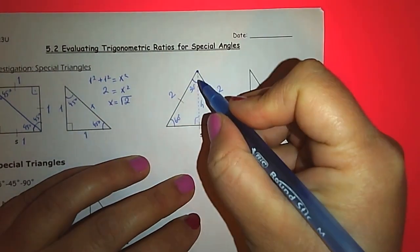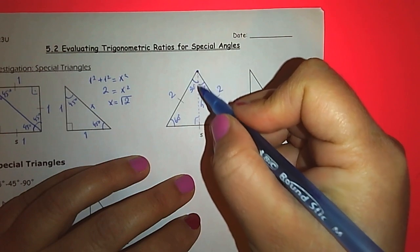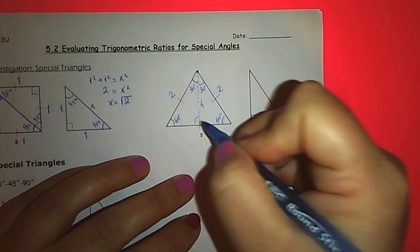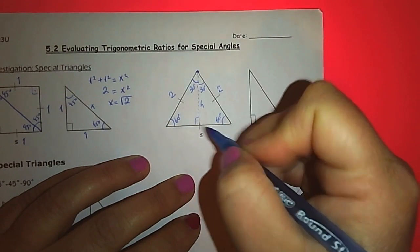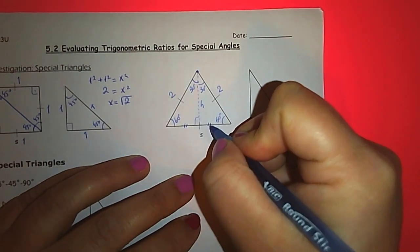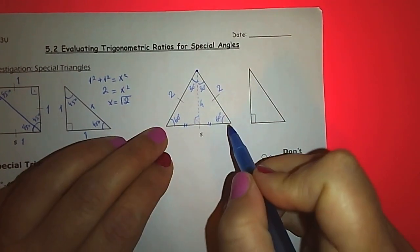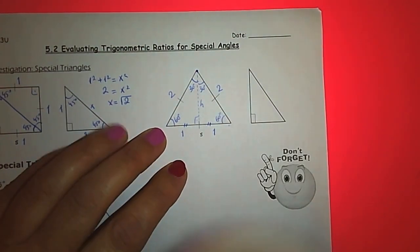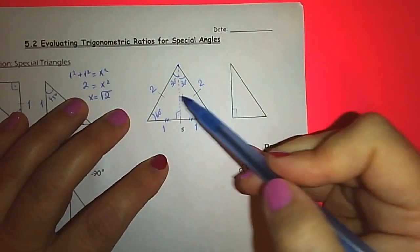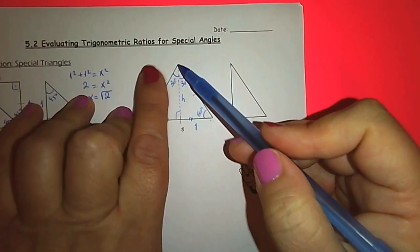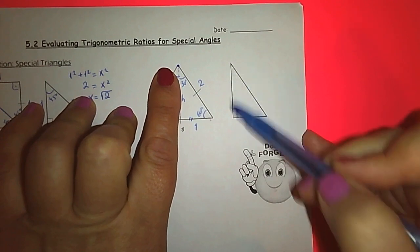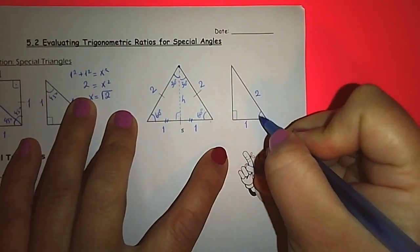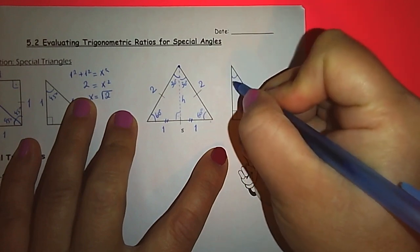Also this height will bisect the base, so it will divide the base into two equal pieces. If the whole length is two units, then we get one unit for each. So now these two triangles are the same. I'm just going to take one of them to work with. So we have one here, two here, 60 degree and 30 degree.